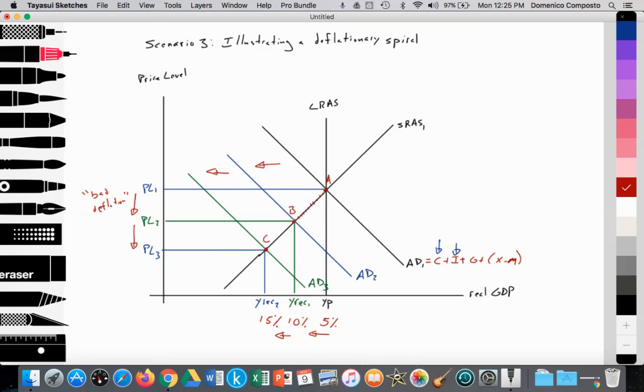We go from point A to point B. The rising unemployment creates greater anxiety, reduced spending, more savings, which just causes aggregate demand to shift in again, and firms to decrease their quantity of aggregate supply, thus increasing unemployment. And it could just continue to shift into AD4, AD5, et cetera.